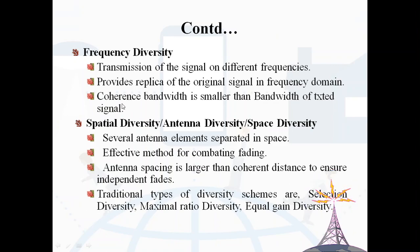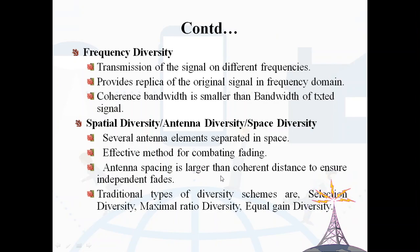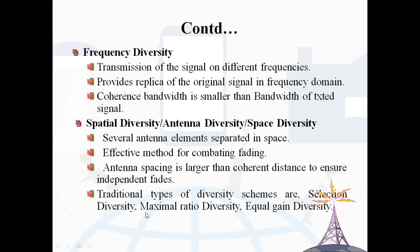Spatial diversity is otherwise known as antenna diversity or space diversity. Here, several antenna elements are separated in space. It is an effective method for combating fading, where the antenna spacing is larger than the coherence distance to ensure independent fades. Traditional types of diversity schemes include selection diversity, maximal ratio diversity, and equal gain diversity.